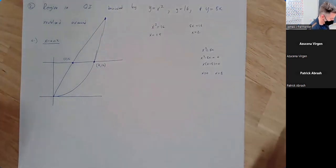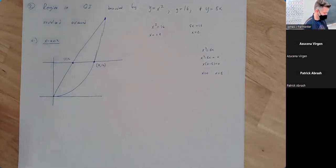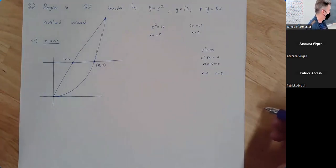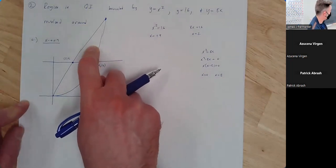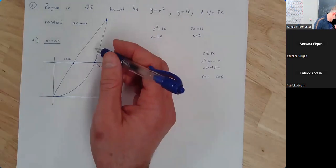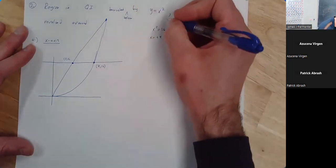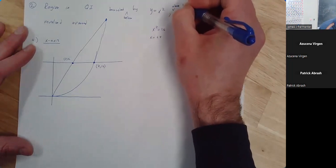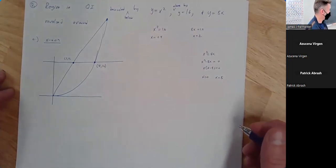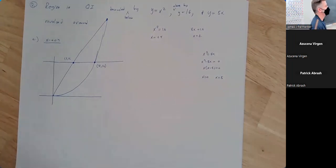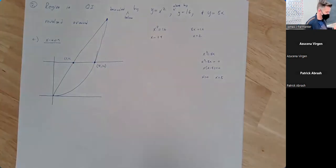You might notice that the way this question is phrased is unfortunately ambiguous — it could be this region or that region. So the person writing this question needs to be more clear. I could say bounded below by x squared, above by y equals 16, and also by y equals 8x. That clarifies what region we're looking for. Just make sure you're reading things carefully when you have questions like this.